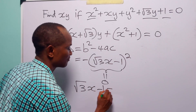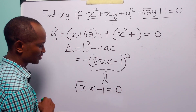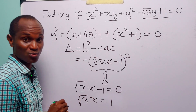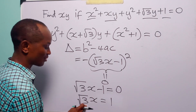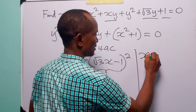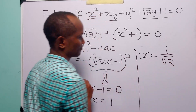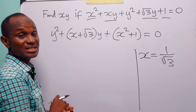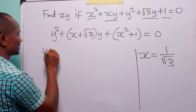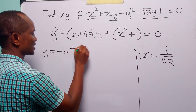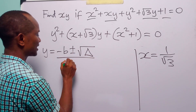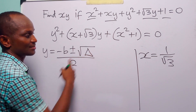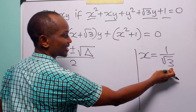So for this quadratic equation to have real roots, root 3x minus 1 must be equal to 0. Adding 1 to both sides, we have root 3x equals 1. Dividing both sides by root 3, we get x equals 1 over root 3.